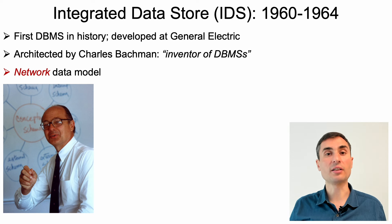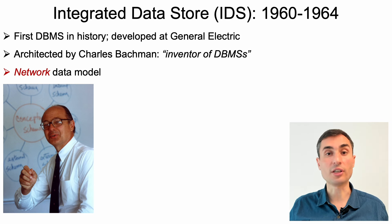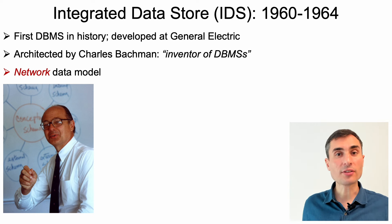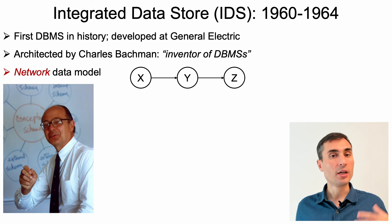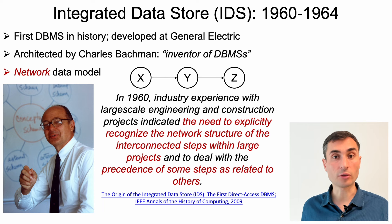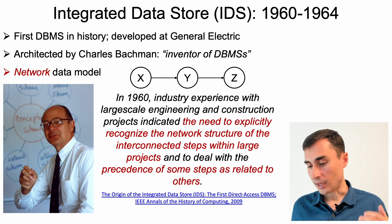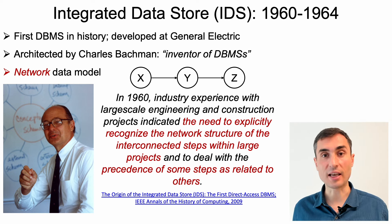IDS was motivated by a suite of applications, the most important being managing records for large engineering and manufacturing projects. The data model of the system was called the network model — and network is really a synonym for graph. In 2009, Bachman wrote an article on IDS's history in which he says the data model needed to model dependencies between different tasks in large engineering projects. Recall that one benefit of graph modeling is that graphs are natural abstractions to model dependency relationships between entities such as X depending on Y and Y depending on Z.